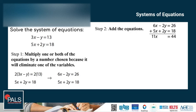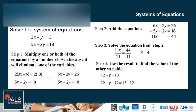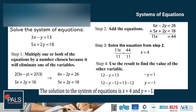Dividing both sides by 11 gives me x equals 4. Since I already have the value of x, which is 4, I substitute 4 for x in Equation 1. That gives me 3 times 4 is 12, minus y is equal to 13. Subtracting 12 from both sides gives negative y is equal to 1, so y is equal to negative 1. The solution to the system of equations is x equals 4 and y equals negative 1.